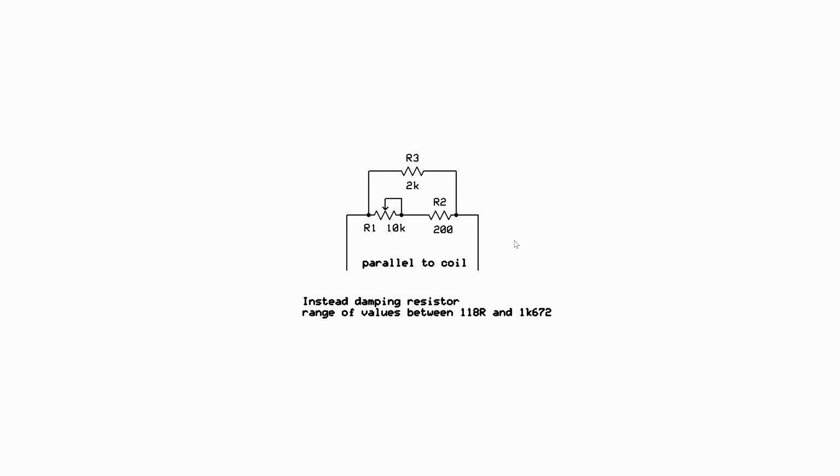But here's the little diagram here. Very easy to build. You just need a 10k pot, a 200 ohm resistor, and a 2k resistor, and you put it parallel to the coil as it says. It gives you this range of values between approximately 118 ohms and 1672 ohms. So a very handy and easy circuit to build.